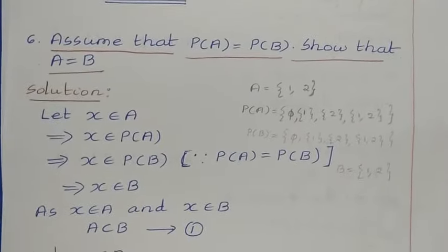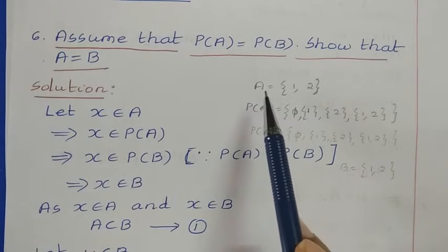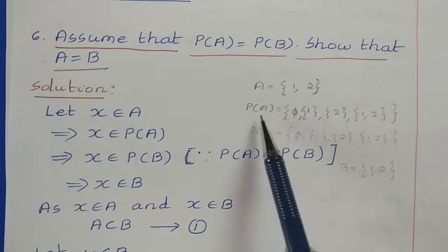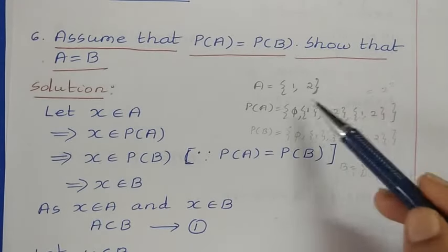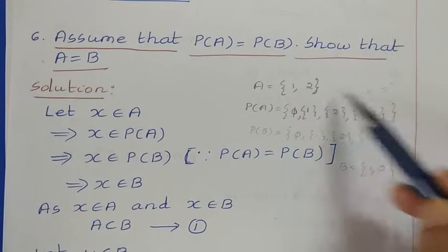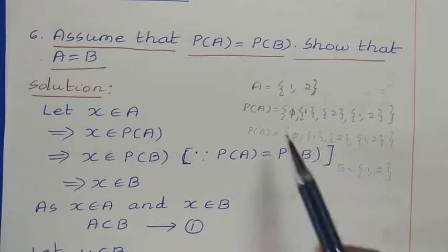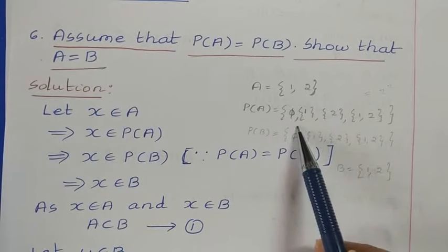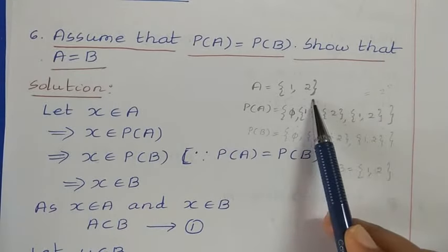Next, question 6: assume that P of A is equal to P of B, show that A is equal to B. P of A and P of B are power sets. For example, if set A contains elements 1 and 2, the power set has 2 squared equals 4 elements. The power set always includes the null set, then individual elements 1 and 2, then the set {1, 2} together. So P of A equals {null set, {1}, {2}, {1,2}}.